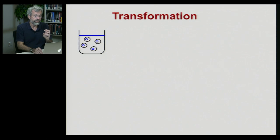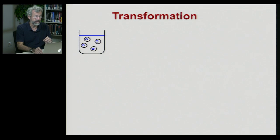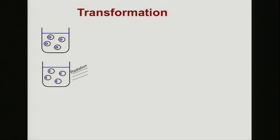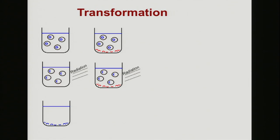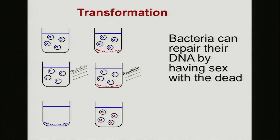The second one is called transformation, and this has to do with DNA repair. Here we have a cartoon of a bunch of bacteria in a flask. Each has their intact circular chromosome with a blue circle. Now if we expose them to some insult like radiation — ultraviolet light or something else — this will break the chromosome, so now we have damaged DNA. But if we allow at the bottom of the flask a supply of bits and pieces of chromosomes of other dead bacteria, the living bacteria will get some spare parts from the dead bacteria and incorporate that into their own genomes, thus repairing their broken DNA. So transformation is where bacteria can repair their DNA by having sex with the dead.